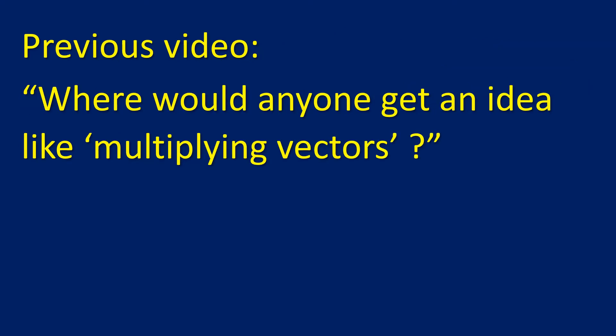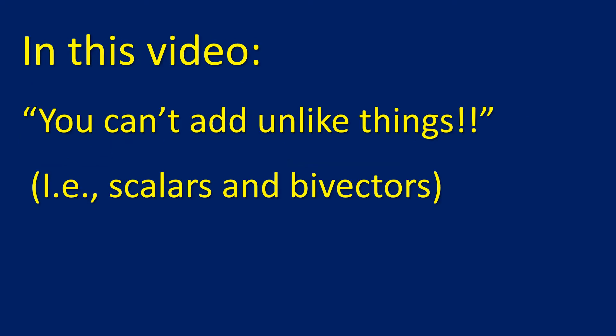A previous video discussed where anyone would get the idea of multiplying vectors in the first place. In this video, we'll address the objection that you can't add unlike things, specifically scalars and bivectors.